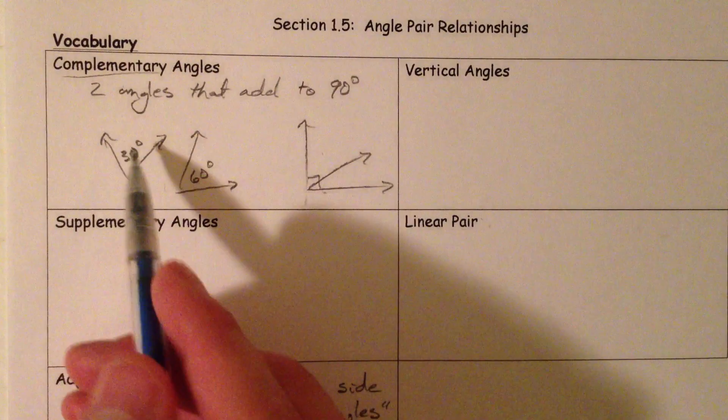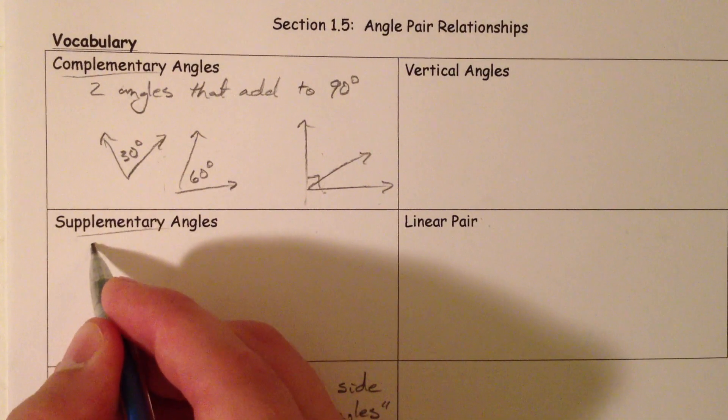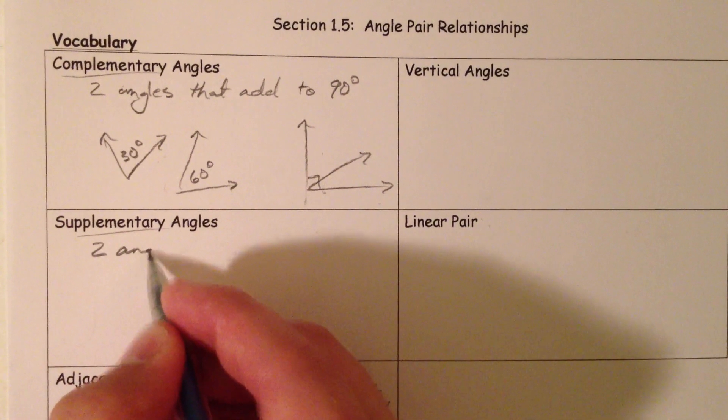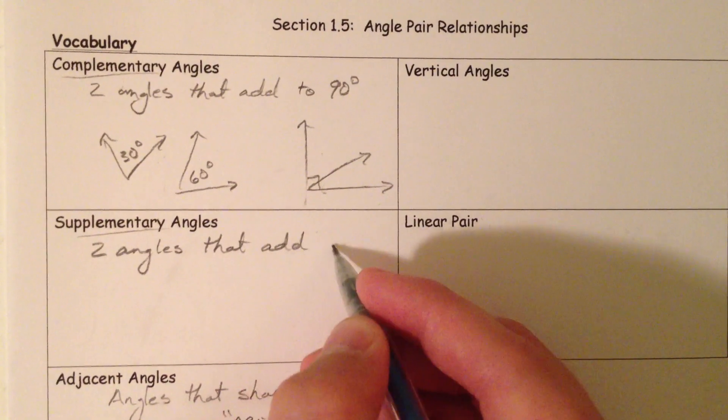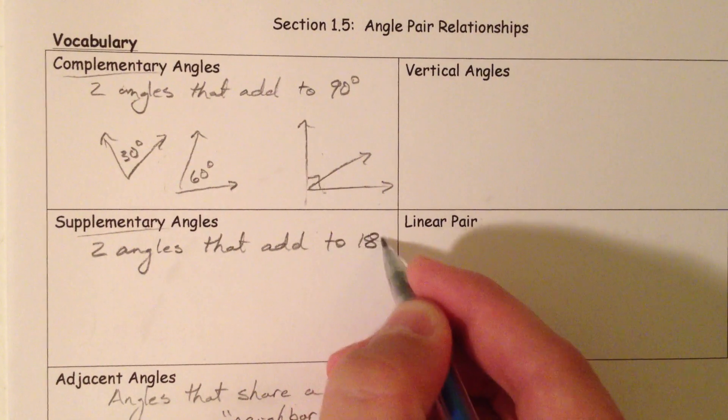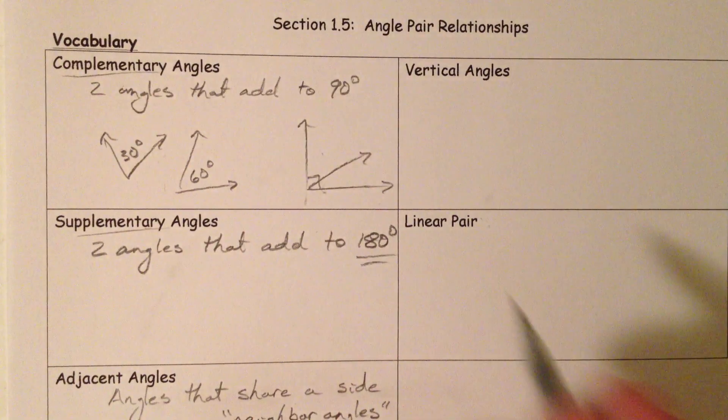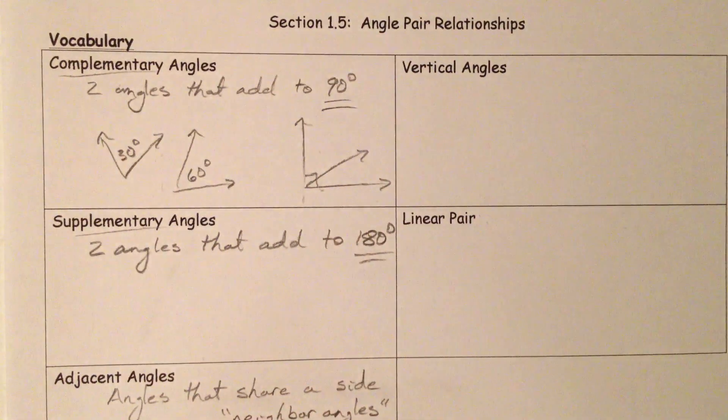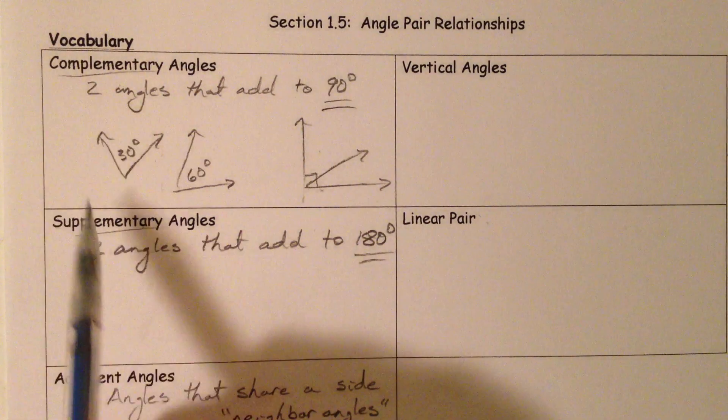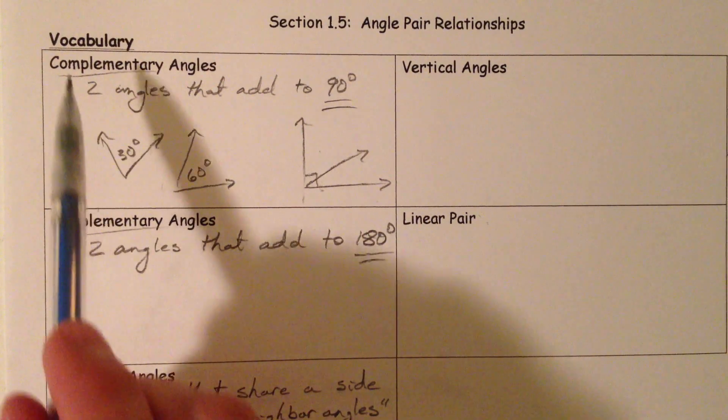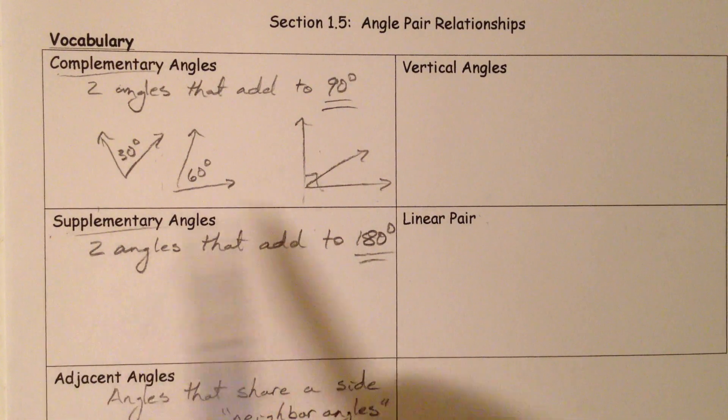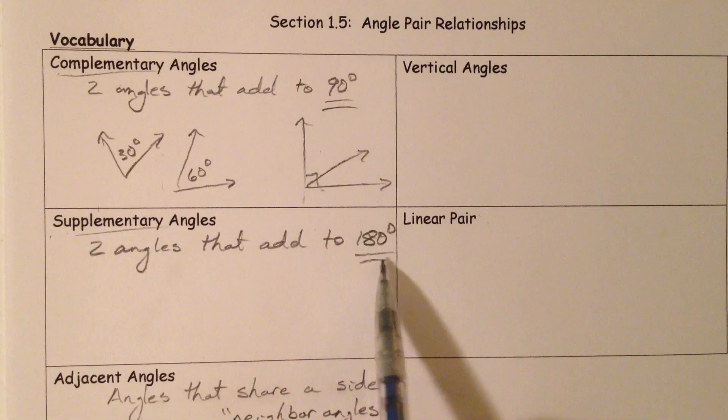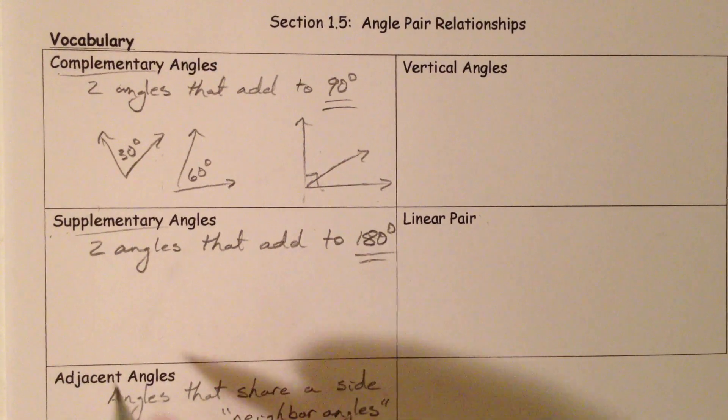Similar to complementary is supplementary. Supplementary are just different because you have two angles that add to 180. Emphasis 180 here and 90 here. This may be a simple way to think of it, but people get these mixed up. I know that C comes before S and so I know that 90 is smaller than 180 and so that's how I keep them straight.